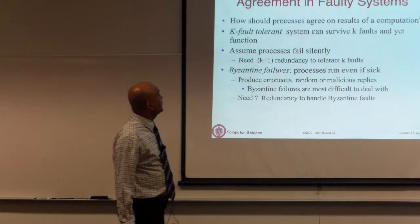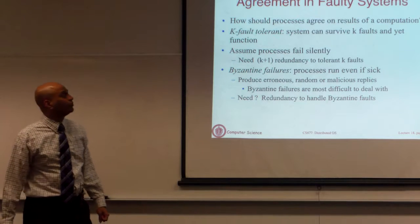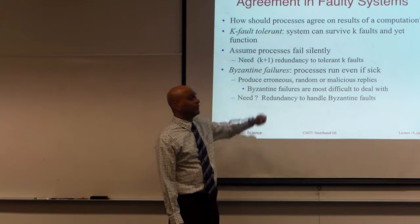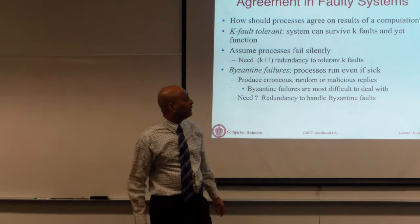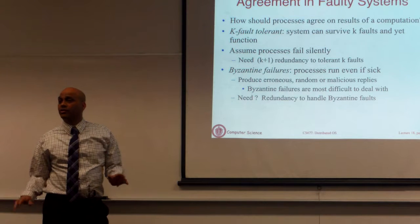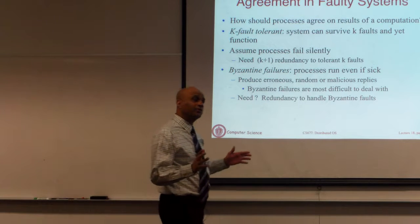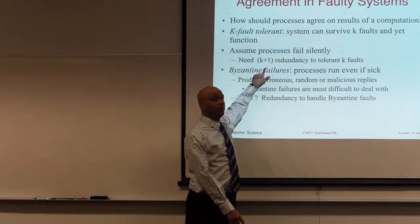We are going to talk about a scenario where the processes are not faulty but the network is faulty. You have two machines communicating over a network. We will assume the processes do not fail but the network is Byzantine faulty — so you send a message with value 1, and the network can deliver 1, deliver 0, or deliver nothing. We want to see if the two machines can agree on what that one-bit message was when the network is behaving arbitrarily.